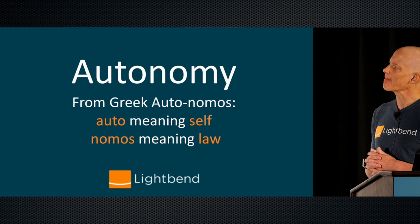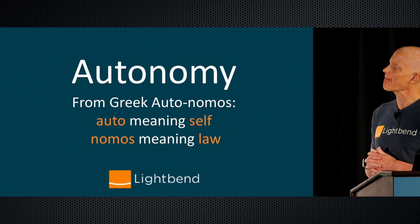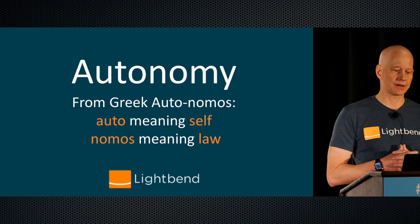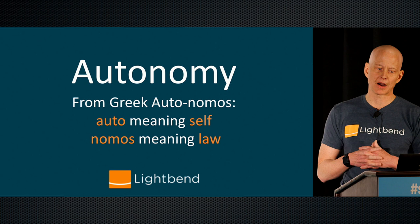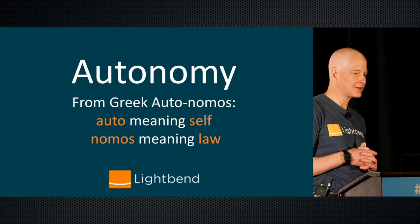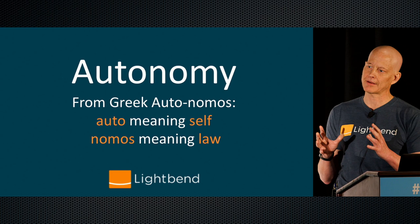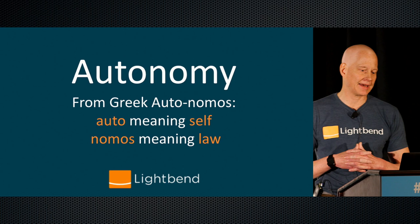A definition I prefer is a system of autonomous, collaborative, distributed services. Two words are key: system and autonomous. Autonomy comes from the Greek word autonomus — auto meaning self, nomus meaning law. An entity within a microservice gives itself its own laws; it's self-governing. This gives the entity freedom from external influences, so external influences no longer have authority over those individual services. You can make decisions and act independently.